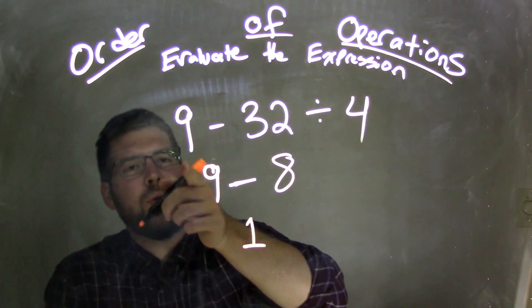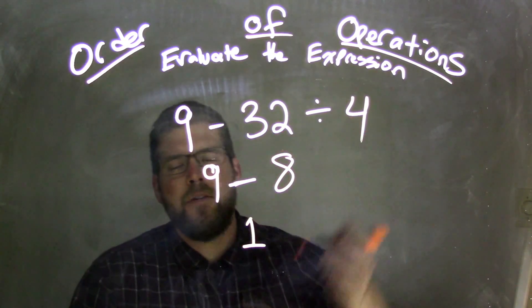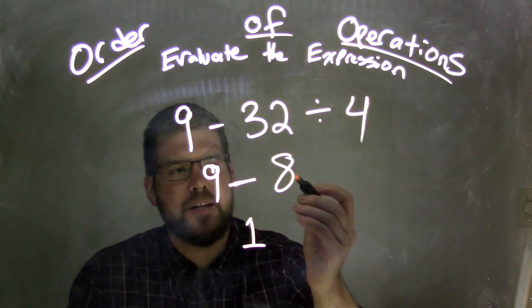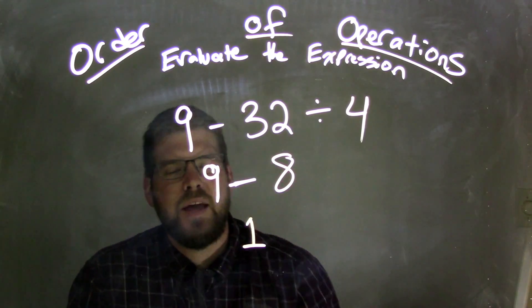So if we started with the 9 minus 32 divided by 4, we would have to do the division first. 32 divided by 4, which came out to be that 8. And 9 minus 8 is 1.